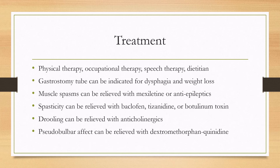A multidisciplinary approach with physical therapists, occupational therapists, speech therapists, and dietitians will also be helpful, as dysphagia and weight loss can be significant in the disease. A gastrostomy tube can be offered in these cases. For symptomatic treatment, muscle spasms can be relieved with mexiletine or anti-epileptics; spasticity may be relieved with baclofen, tizanidine, or botulinum toxin; drooling can be relieved with anticholinergics; and pseudobulbar affect can be relieved with dextromethorphan-quinidine.